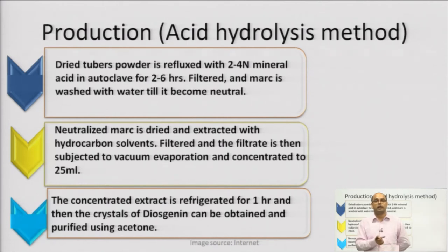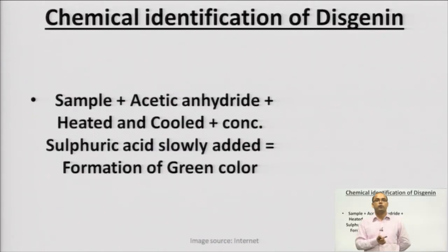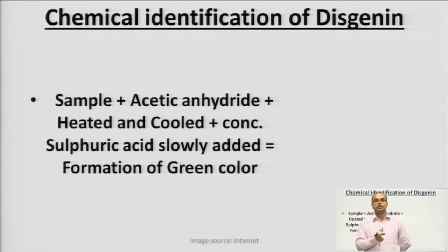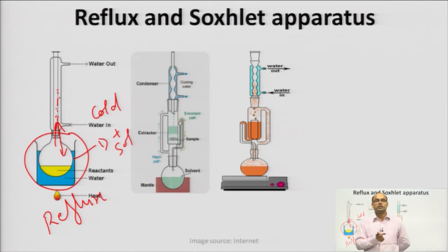For the chemical identification test of diosgenin, acetic anhydride is added to the sample and the mixture is heated. After cooling, concentrated sulfuric acid is slowly added through the side tube. If a green color forms, it confirms the presence of diosgenin in the sample.